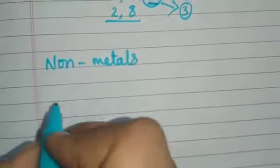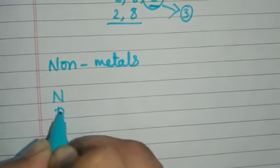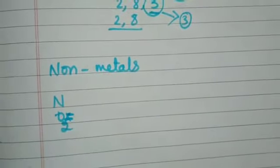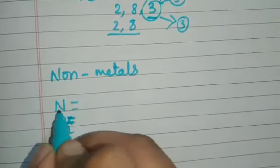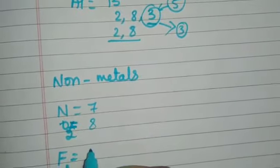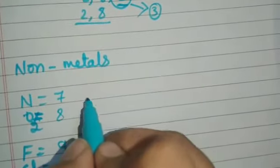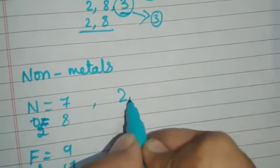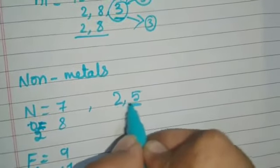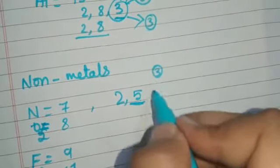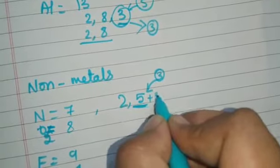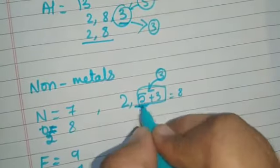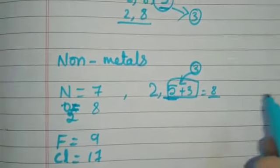Now let us take non-metals. Examples of non-metals include nitrogen, oxygen, fluorine, and chlorine. Nitrogen has atomic number 7. In the first shell it fills 2 electrons, and the second shell has 5 electrons remaining. It requires three more electrons. So nitrogen will gain three electrons from another atom and will complete its octet structure — five plus three gives eight electrons in the outer shell.